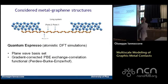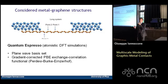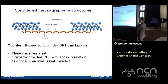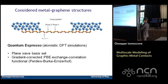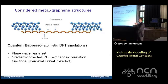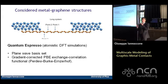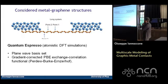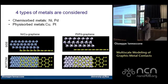We simulated with ab initio atomistic DFT simulations using Quantum ESPRESSO structures: two metal regions connected by a graphene sheet. We use a plane wave basis set and gradient-corrected PBE exchange-correlation functional. The structure is symmetric to avoid artificially induced dipoles.